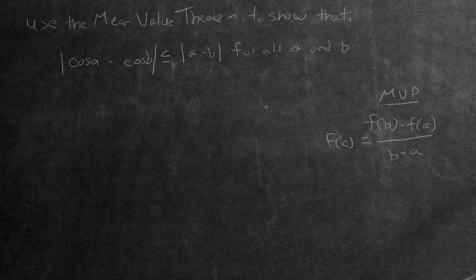Hi there, in this video we're going to be solving the following problem. Use the mean value theorem to show that the absolute value of cosine A subtract cosine B is less than or equal to the absolute value of A subtract B for all of A and B.